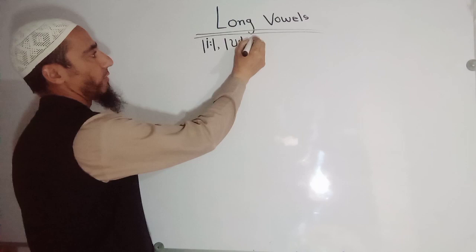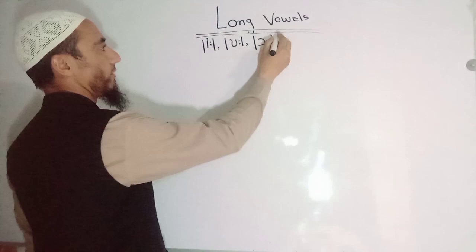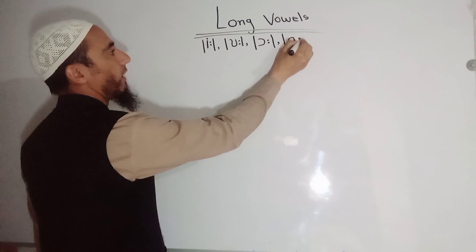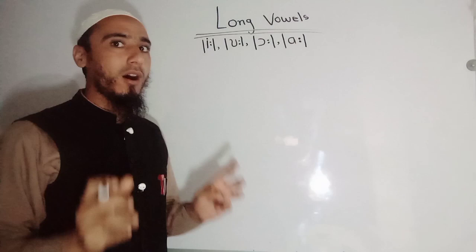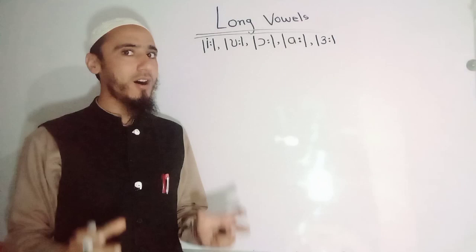The third long vowel sound we have is the ɔː sound. We also have another long vowel sound, and the last one is also an ɔː-type sound. So these five sounds, along with their symbols, will become clear when I share practical examples with you.